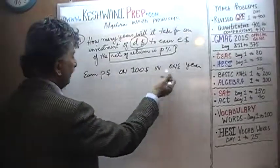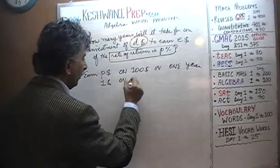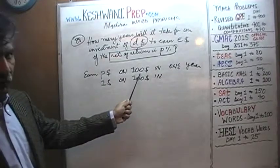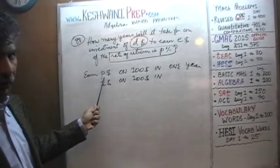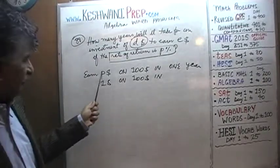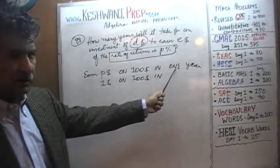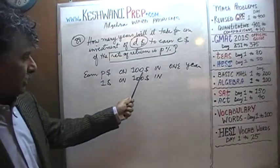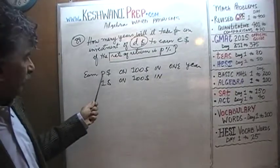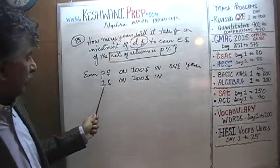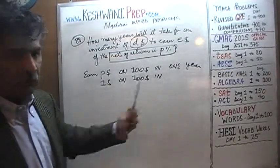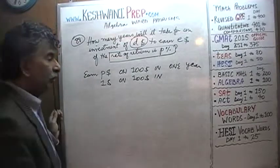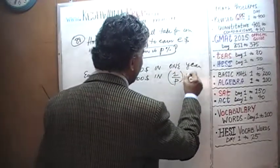A rate of return of P percent means you earn P dollars in one year on an investment of $100. If P is 3, you earn $3 on $100 in one year, so you'd earn $1 in one-third of a year. If P is 5, you earn $1 in one-fifth of a year. Therefore, $1 on $100 is yielded in 1 over P years.